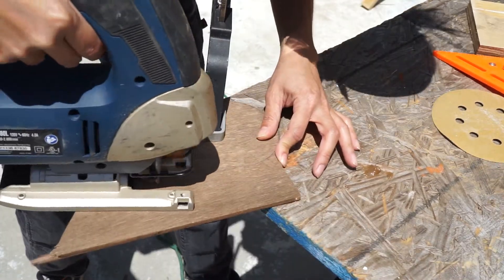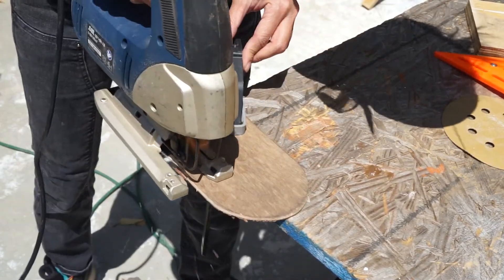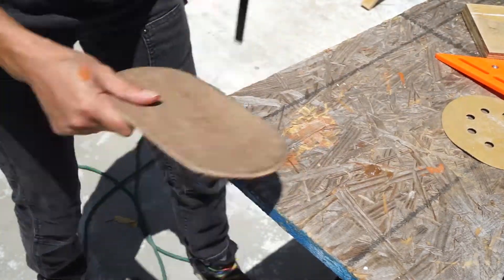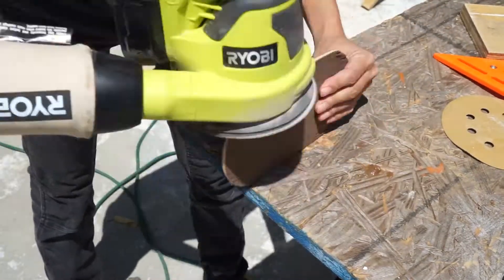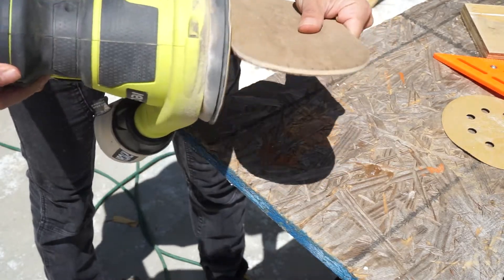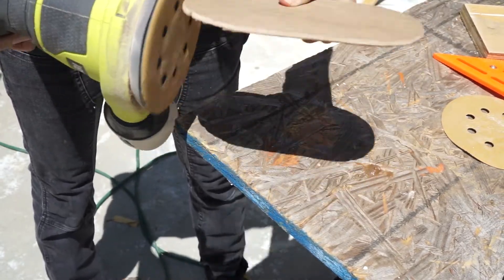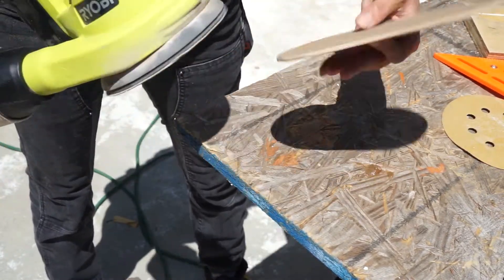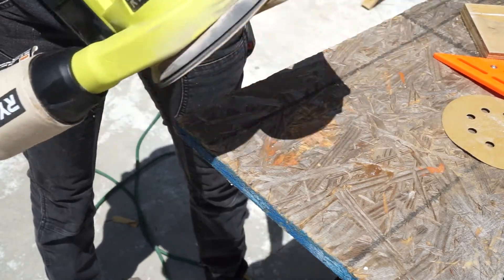I cut out the template and then realized I should have cut out the inside portion first before cutting the outside, because now I only have this amount of material to clamp down onto my table to cut out the inside. That did not help.